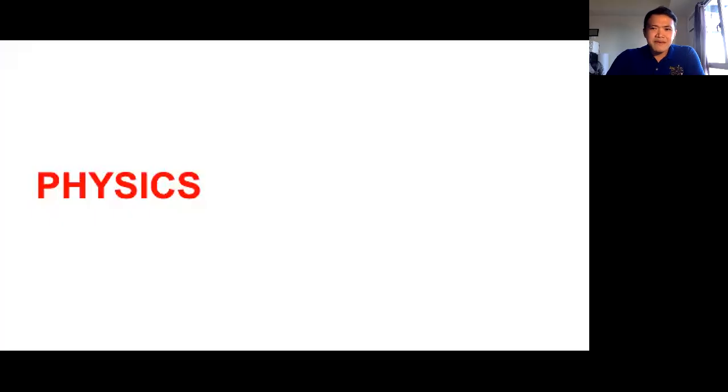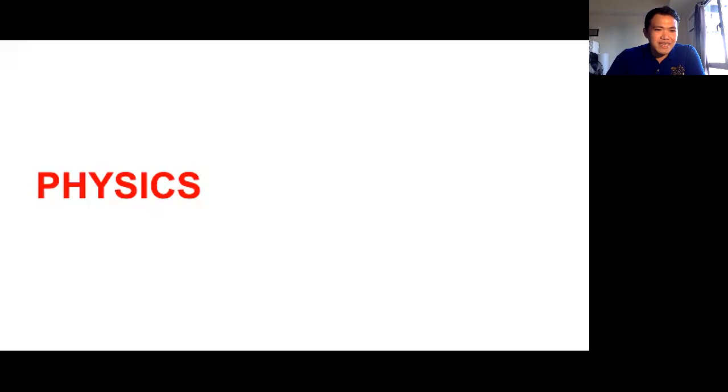So let's try to know what physics is. Physics basically came from the word physikus, a Greek word which actually means nature. Everything is nature, right? How nature works, how things work. So in physics we try to explain, we try to study everything. But let's have the proper definition of physics. Physics is the study of matter, energy and its interaction.